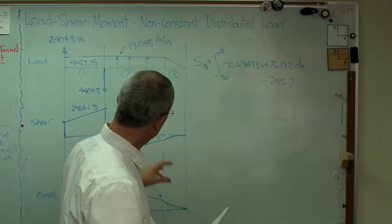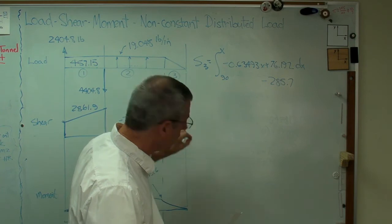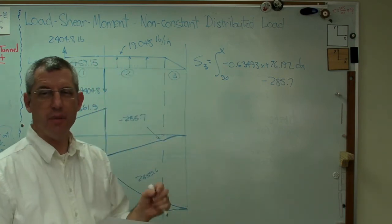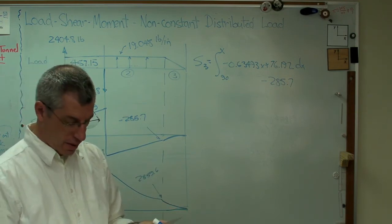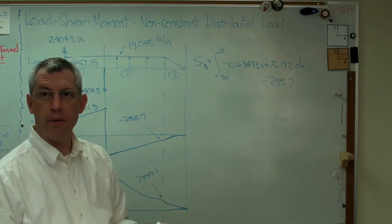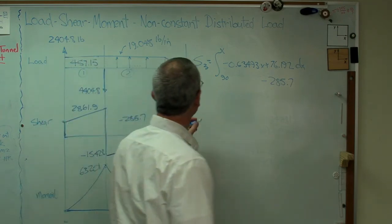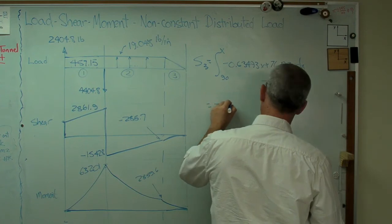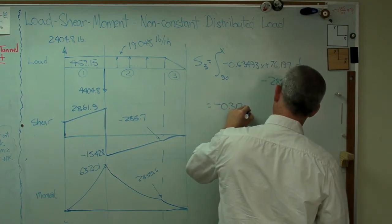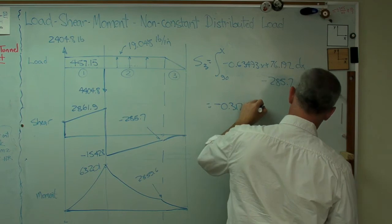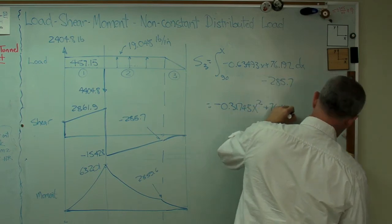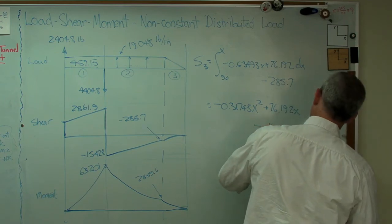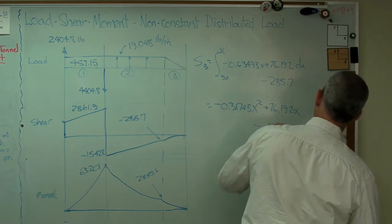Now, when you work through this problem, if you don't get all the way right to the very zero at the end, where the shear and the moment are supposed to be zero, if it comes out a very small number, that's just a round-off error. Don't let that fool you or worry you too much. And you work that out and you get minus 0.31745x squared plus 76.192x minus 4571.5. That's what I got.